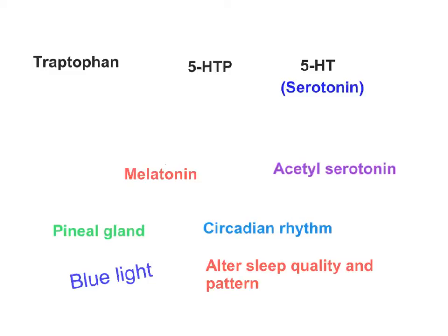Let's briefly revise the conversion of tryptophan into melatonin. Tryptophan is initially converted into 5-hydroxytryptophan, and this is done by the enzyme tryptophan hydroxylase. Note that tryptophan hydroxylase needs tetrahydrobiopterin (BH4).